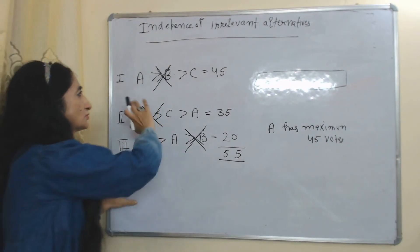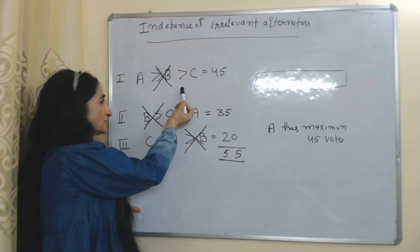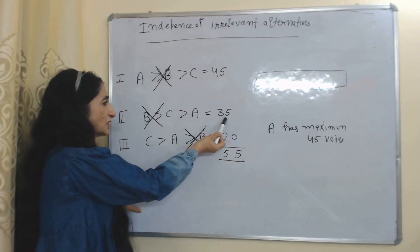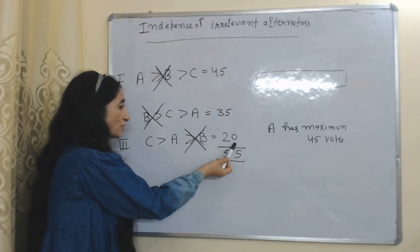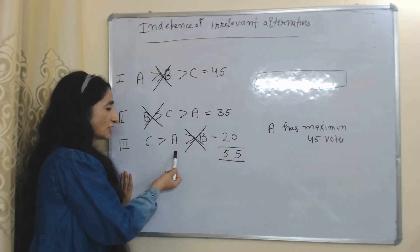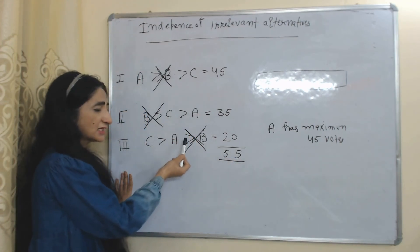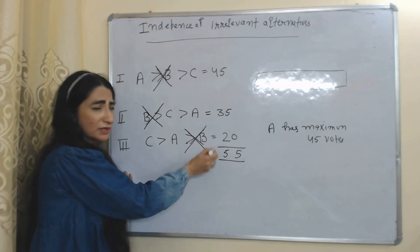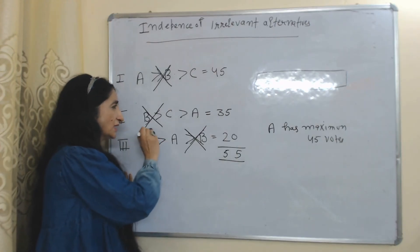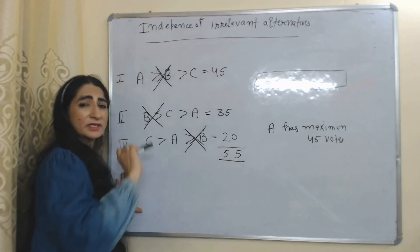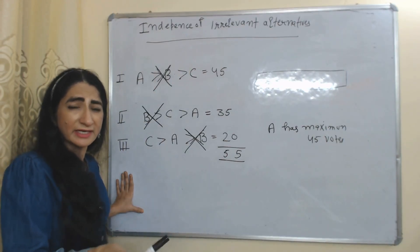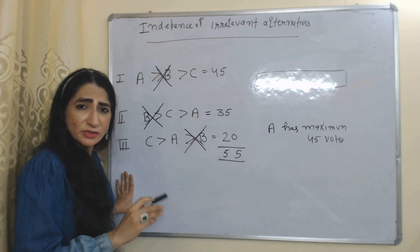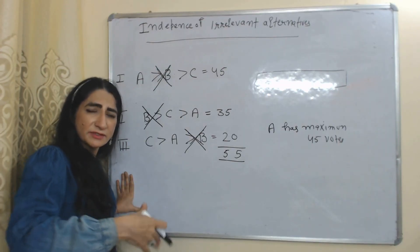Now suppose we remove candidate B from all cases. After removing B, the situation completely changes. In the first case, 45 voters prefer A over C. In the second and third cases, 35 + 20 = 55 voters prefer C over A. So now C is the winner, not A. This shows that removing B affected the outcome between A and C, violating the independence of irrelevant alternatives condition.